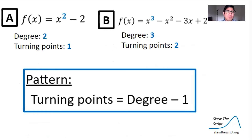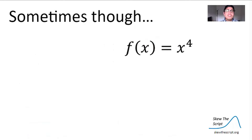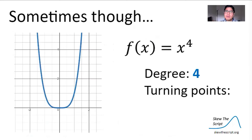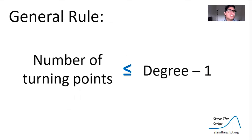We just made another useful mathematical discovery. Let's make sure our pattern is always true. Here's a really simple polynomial: x to the fourth has degree 4, but looking at its graph — it looks similar to x squared but with a wider, flatter valley — it only has one turning point. So in general, the number of turning points is less than or equal to the degree minus one. The number of turning points will never equal the degree and will never be higher than the degree.